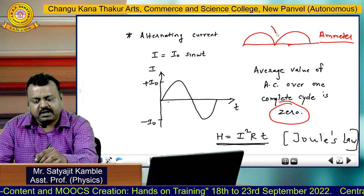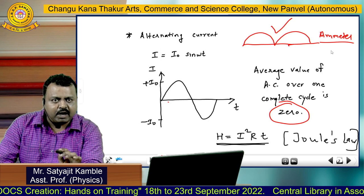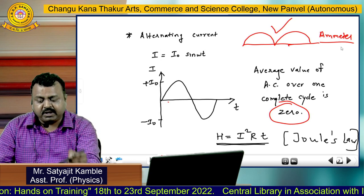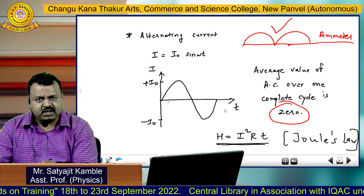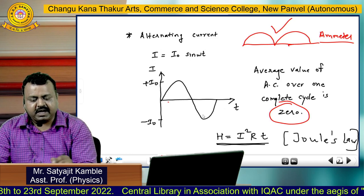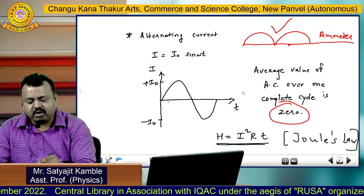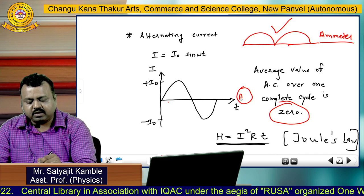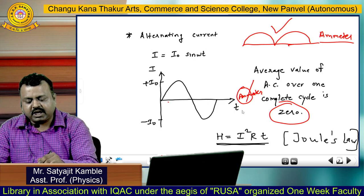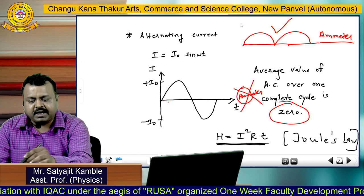Using an ammeter we can measure direct current, because an ammeter always measures the average value of current. But if we use an ammeter to measure alternating current, then it is not possible, because for alternating current the average value is zero. So using an ammeter we cannot measure alternating current — we can only measure direct current.